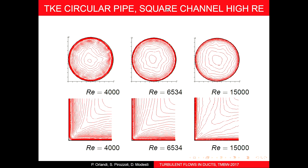For the pipe, this shows the Reynolds number effect. At very high Reynolds number, everything moves closer to the wall, but not much else is happening in the outer region.